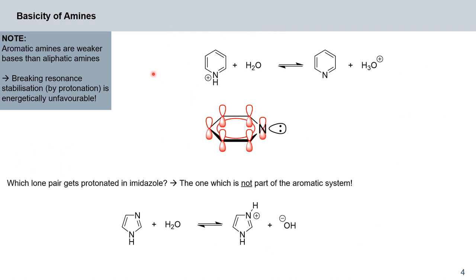Now, what about the basicity of aromatic heterocycles that contain amine functionalities? In this case, we have pyridine and the corresponding conjugate acid, the pyridinium cation. What we see here is that the pKa is 5.2, so it's a slightly better base than aniline.